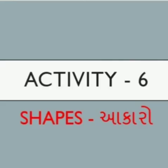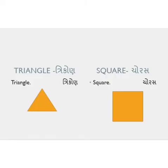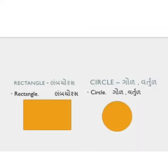વિદ્યાર્થીઓ, Next Activity: Spell out the shapes. Triangle: T, R, I, A, N, G, L, E — Triangle, it has 3 corners. Square: S, Q, U, A, R, E — Square, it has 4 sides. Rectangle: R, E, C, T, A, N, G, L, E — Rectangle, it has 4 sides. Circle: C, I, R, C, L, E — Circle, it is round. Oval: O, V, A, L — Oval, it has 5 sides, it is round.